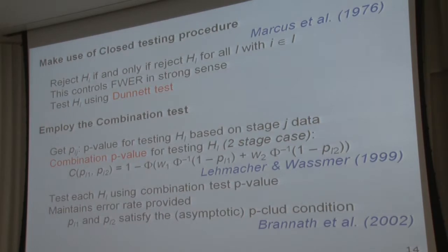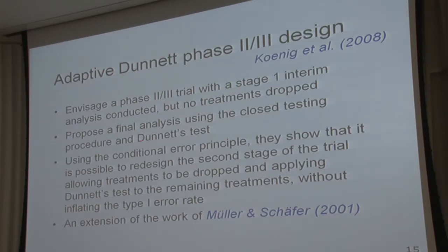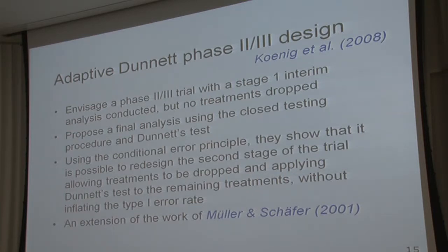The third method for phase two-three designs is the adaptive Dunnett method, a slightly more recent reference extending the work of Müller and Schäfer published in 2001. The idea is that if we start a phase two-three design with the stage one interim analysis conducted but no treatments dropped, and propose a final analysis using a closed testing procedure and a Dunnett test retaining everything, we can use the conditional error principle. The authors show it's possible to redesign the second stage of the trial allowing treatments to be dropped and applying the Dunnett test without inflating the type one error rate.